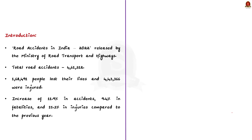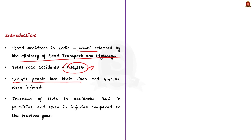This is a straightforward question. In the introduction, highlight data regarding road accidents. According to the Annual Report on Road Accidents in India 2022 released by the Ministry of Road Transport and Highways, a total of 4,61,312 road accidents were reported in states and Union Territories during 2022. Among them, 1,68,000 people lost their lives and 4,43,000 people were injured — marking an increase of 11.9% in accidents, 9.4% in fatalities and 15.3% in injuries compared to the previous year.